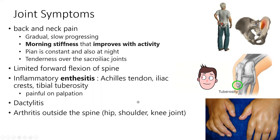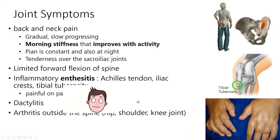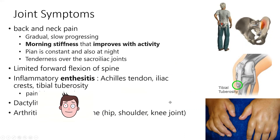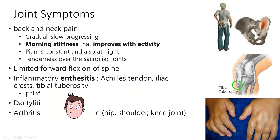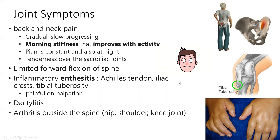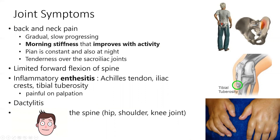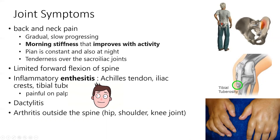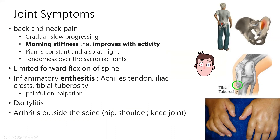Enthesitis also involves the Achilles tendon, iliac crest tendons, and tibial tuberosity. The patellar tendon and iliac tendons in the pelvis can become inflamed causing pelvic irritation beyond just the sacroiliac joint. Dactylitis — where the fingers get inflamed — is also seen. Arthritis outside of the spine can occur in the hips, shoulders, and knees.